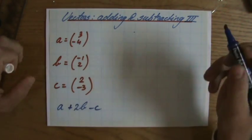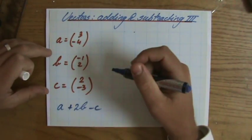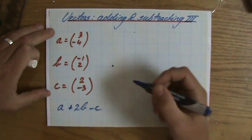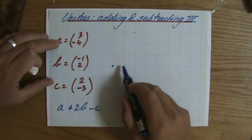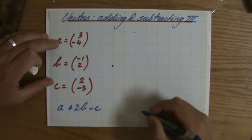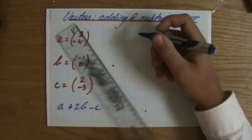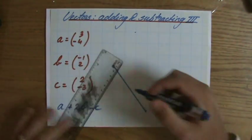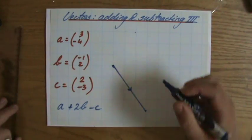The question now is A plus 2B minus C. Now let's have a quick look. If I draw it first without looking at those column vectors, I'm going to start here. A is 3, -4, so 1, 2, 3, 1, 2, 3, 4. That's the endpoint, so I'm going to... This is just a sketch. I'm still using my ruler. So that's A.